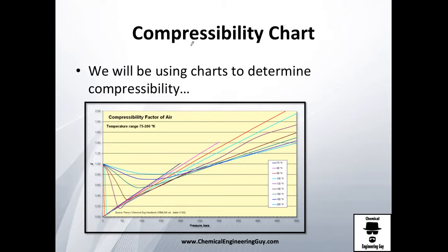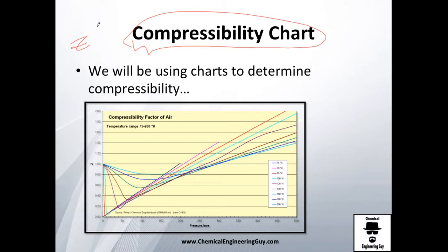We're talking about the compressibility factor, and you're probably asking yourself where we're going to get this Z factor or compressibility factor. Are we going to calculate it? We're going to be using compressibility charts. You may use tables as well, but you will need a lot of tables, so that's not that common. The most common approach will be to use compressibility charts.